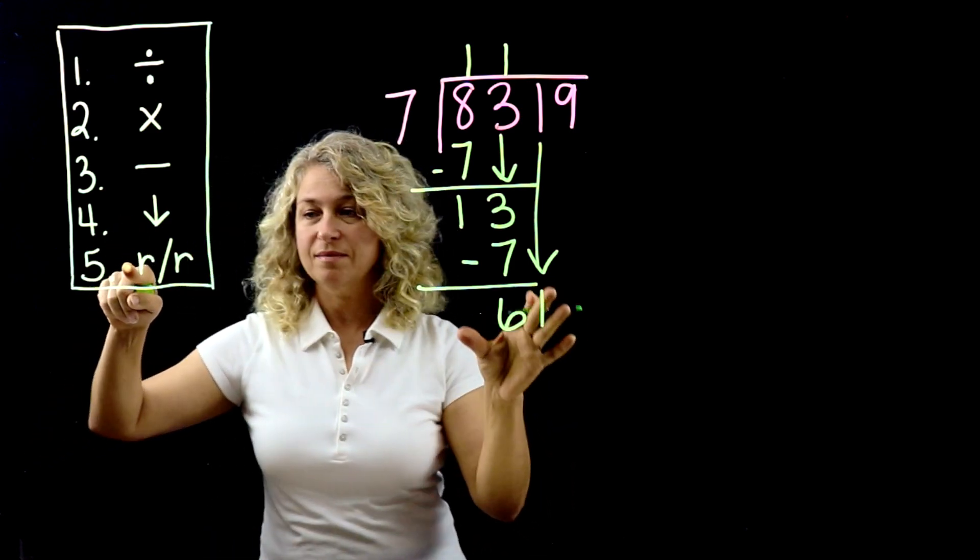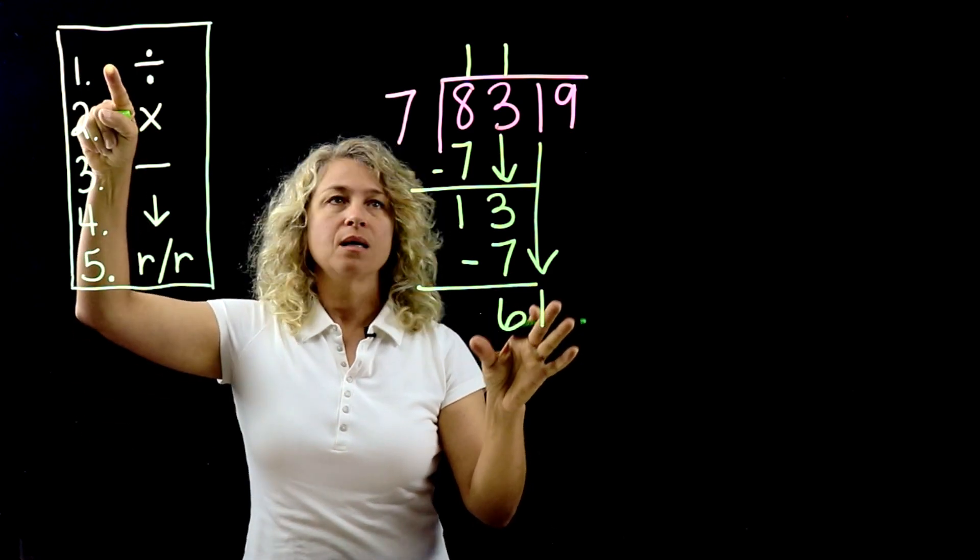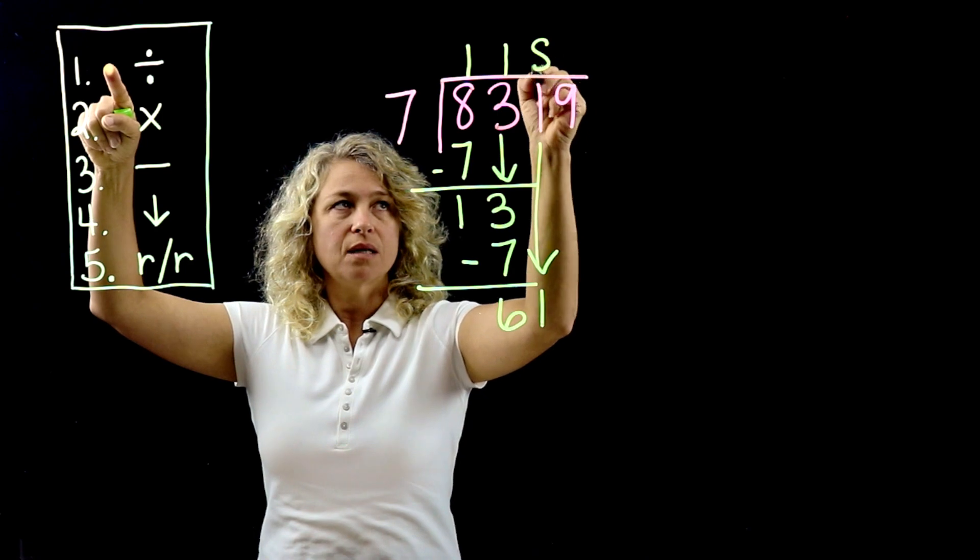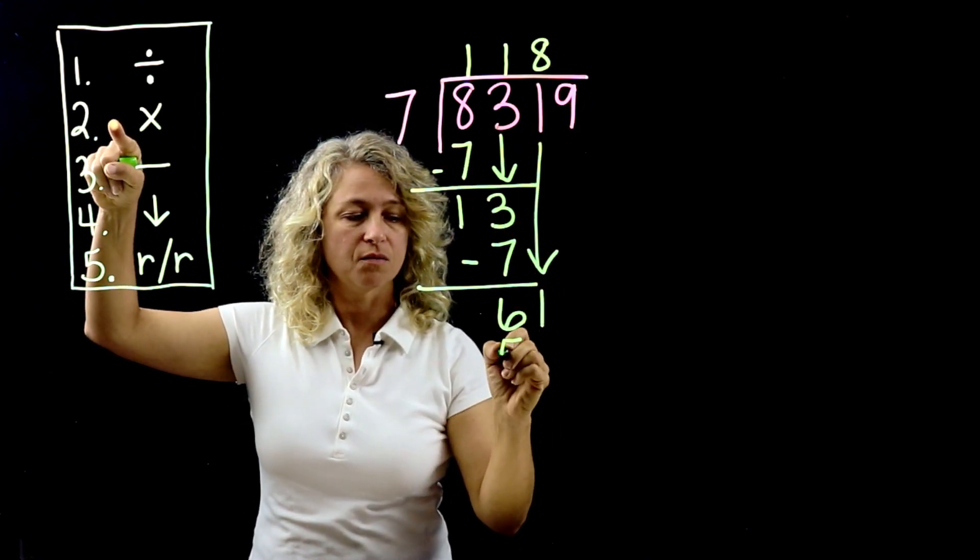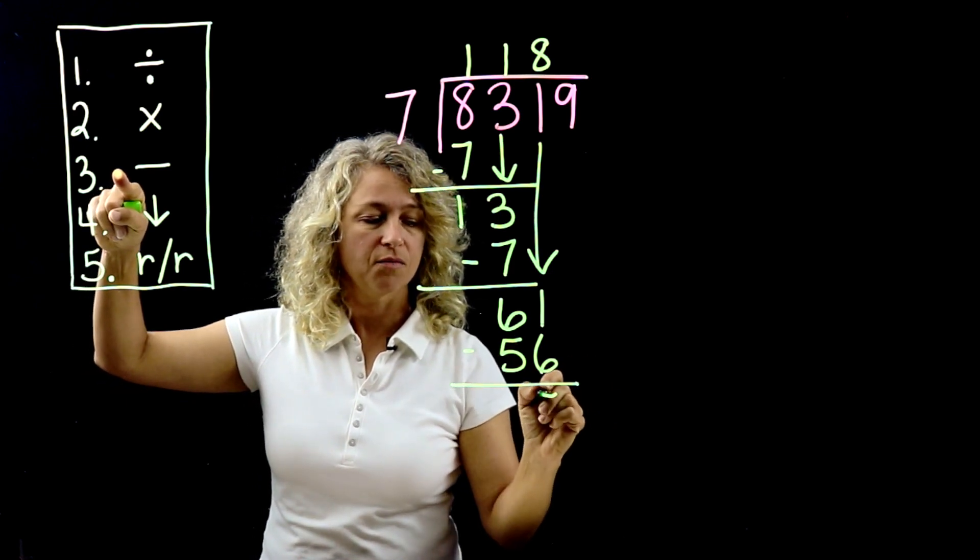Repeat or remainder? We're going to repeat, right? Okay, so keep repeating. Now 7 can go into 61 eight times. 8 times 7 is 56. Subtract and get 5.